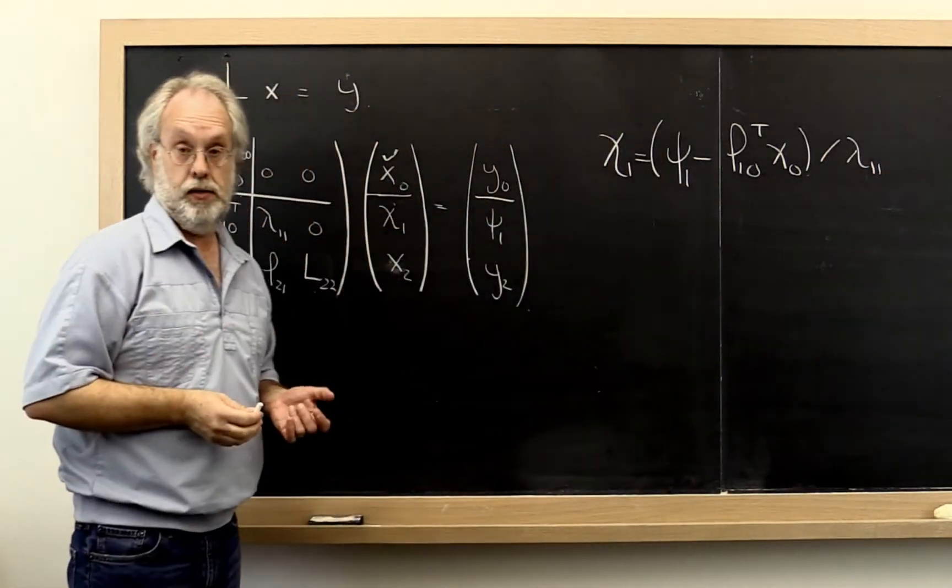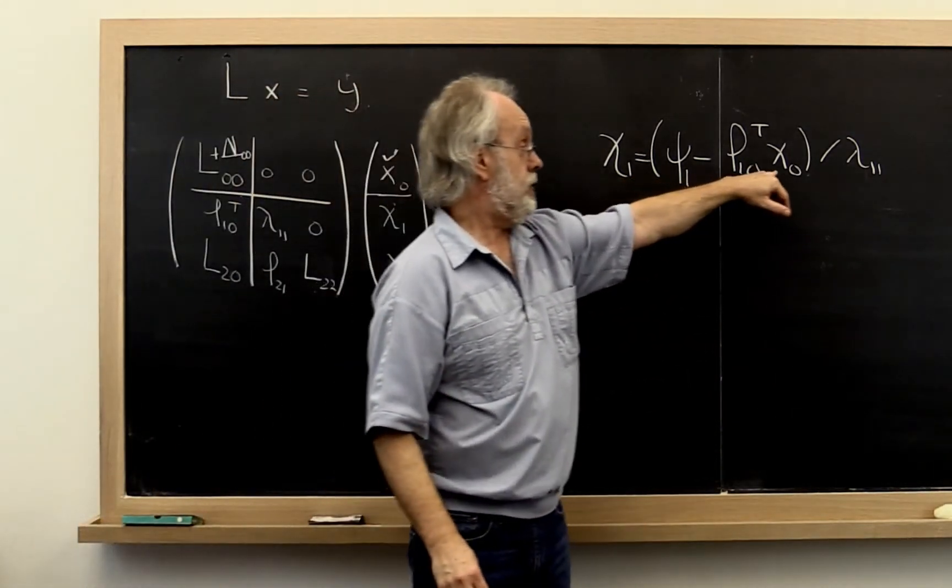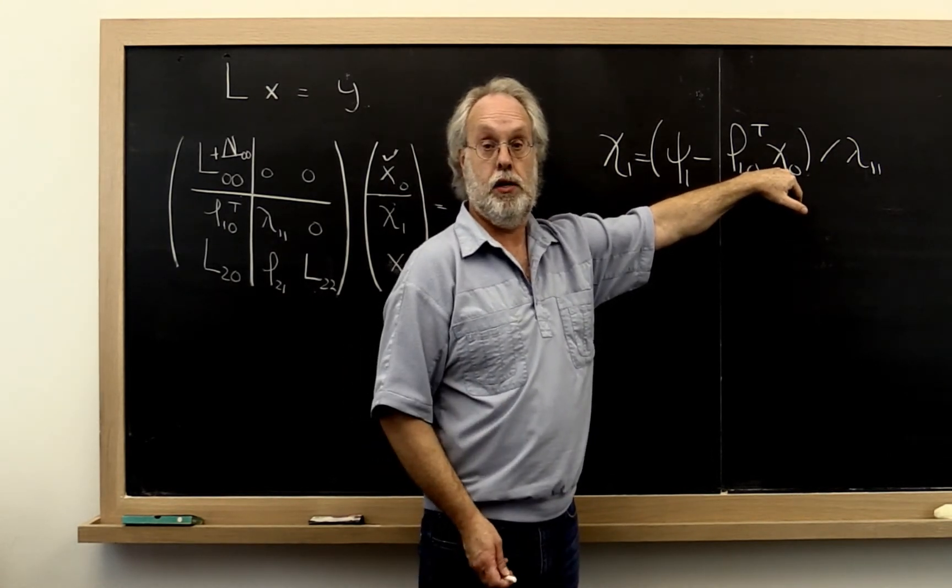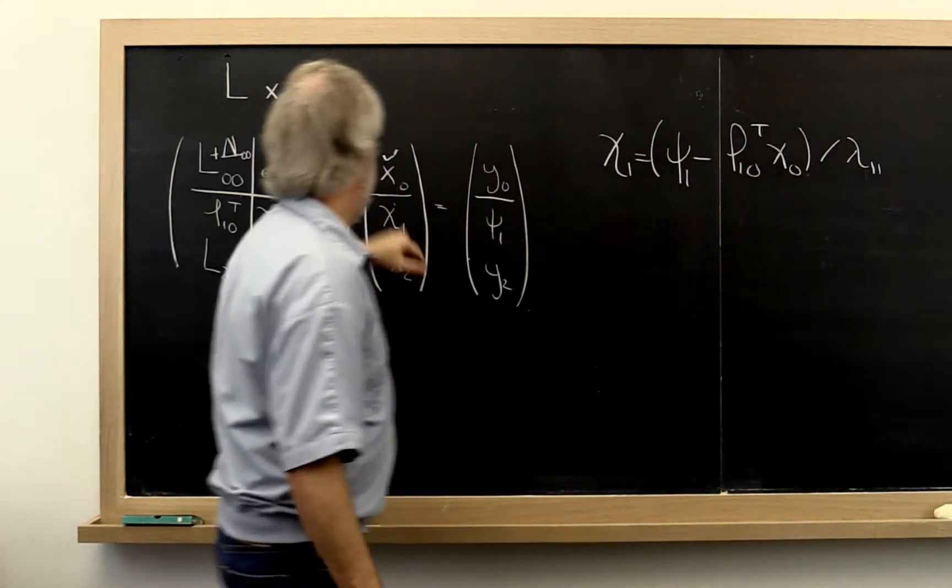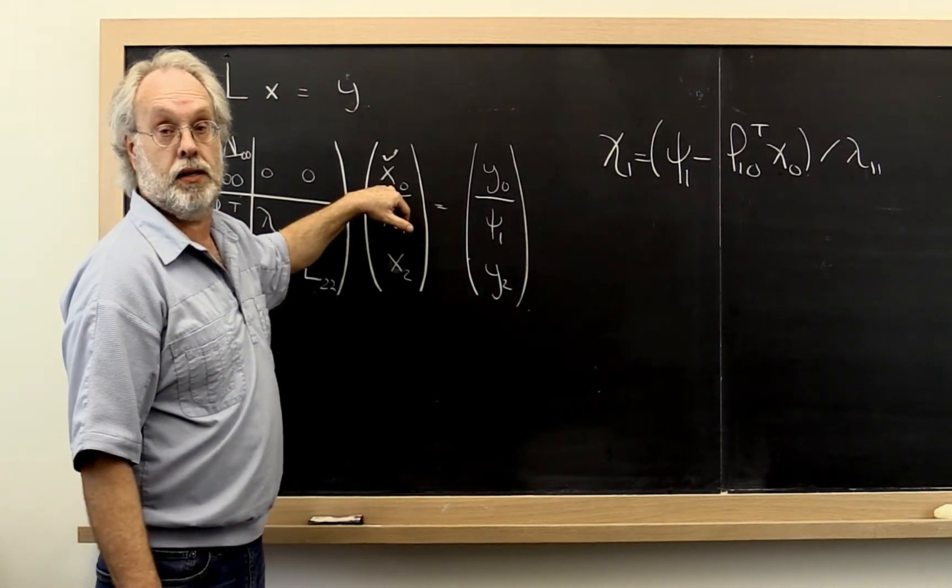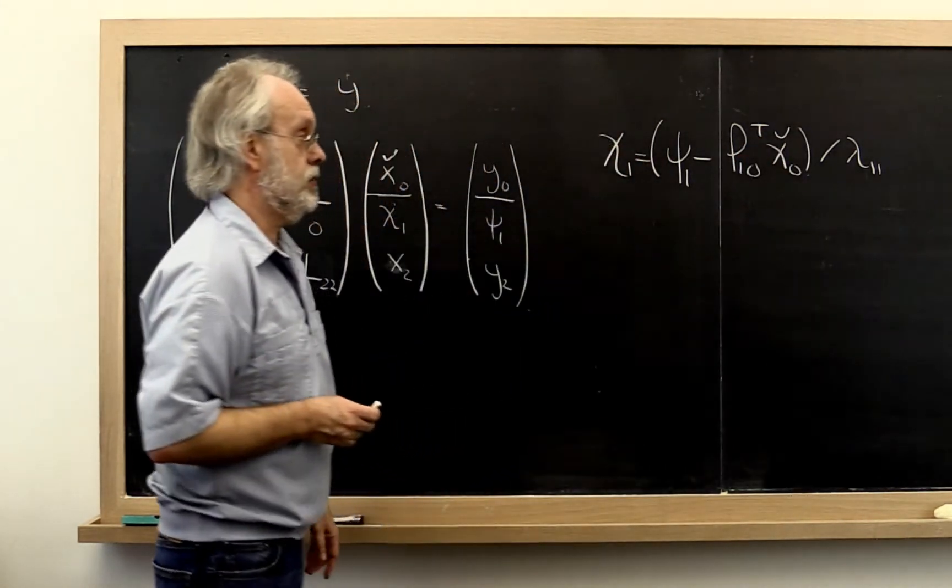However, we will never have, or we typically don't have x0 actually available because x0 was computed only approximately. So we need to put a check on this. Okay?